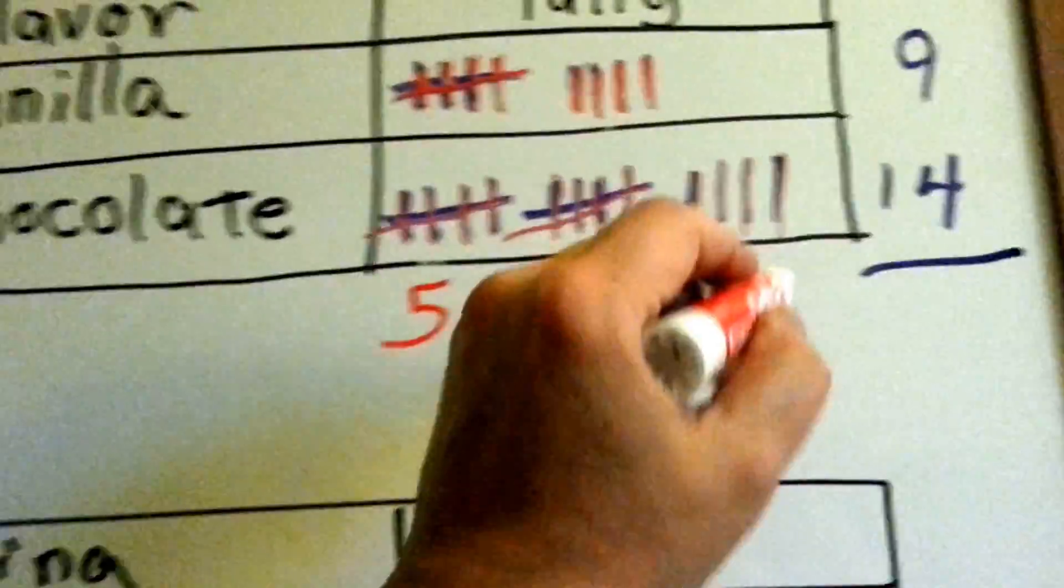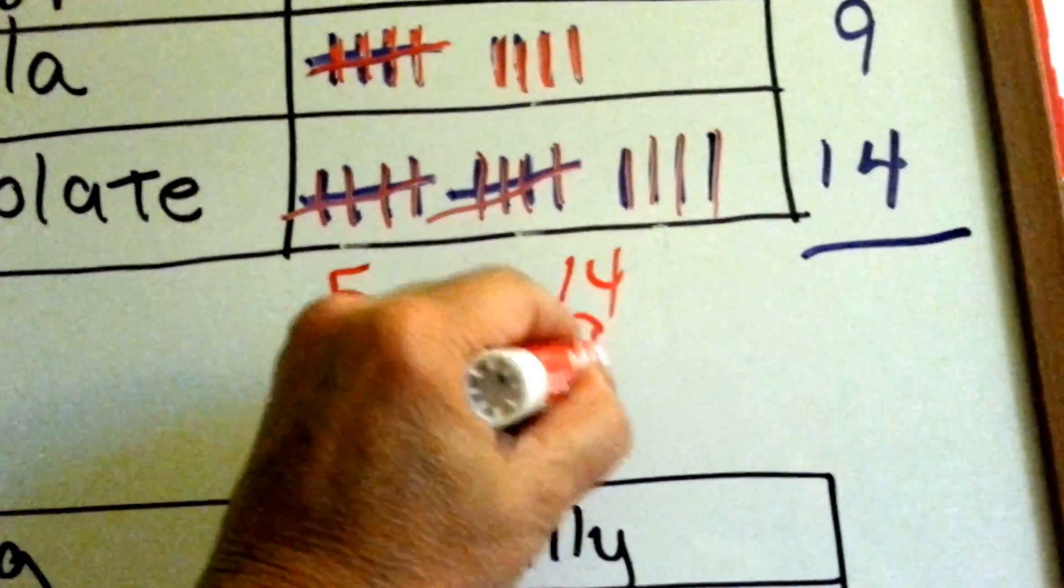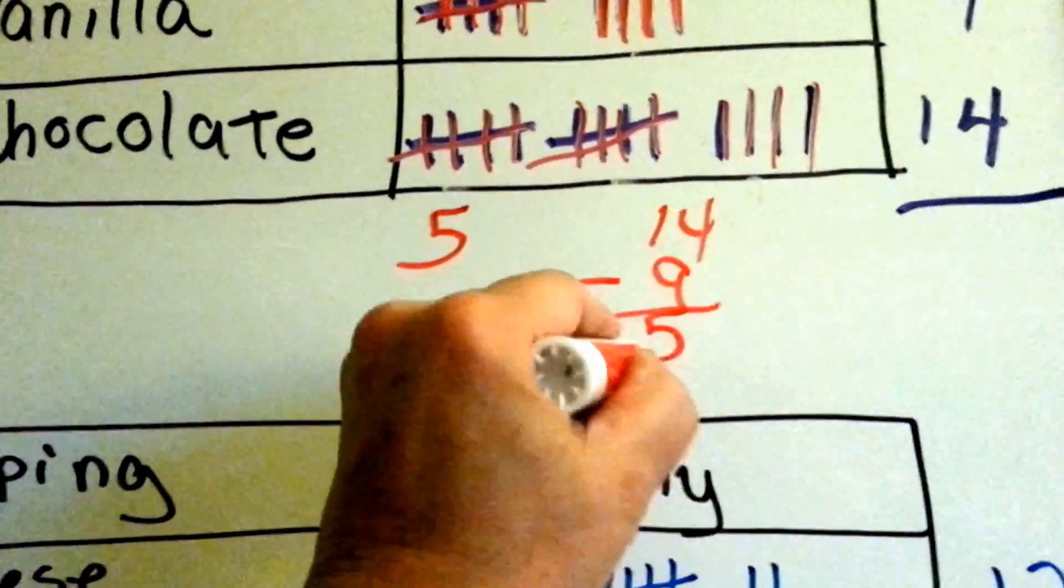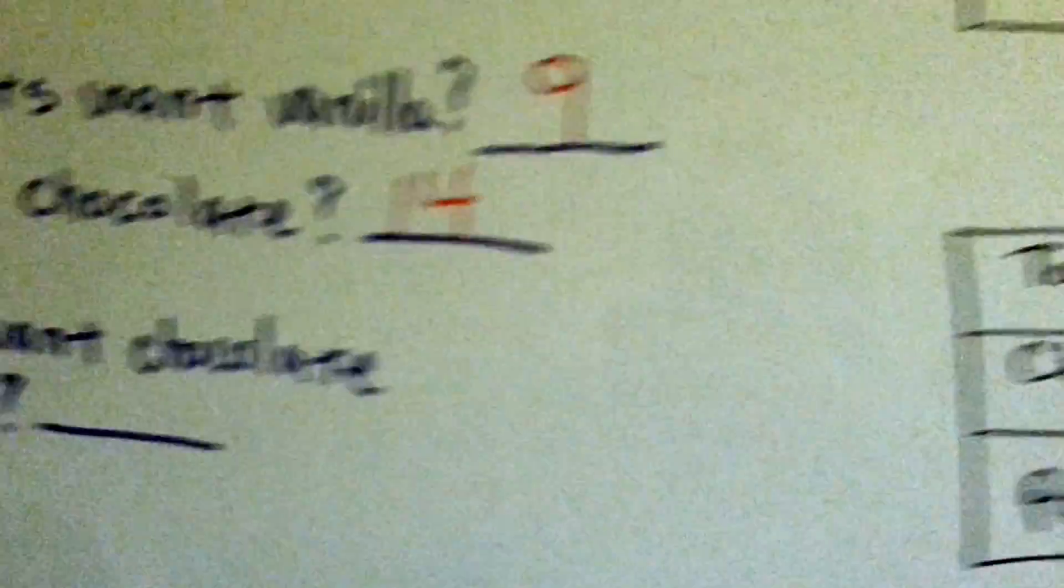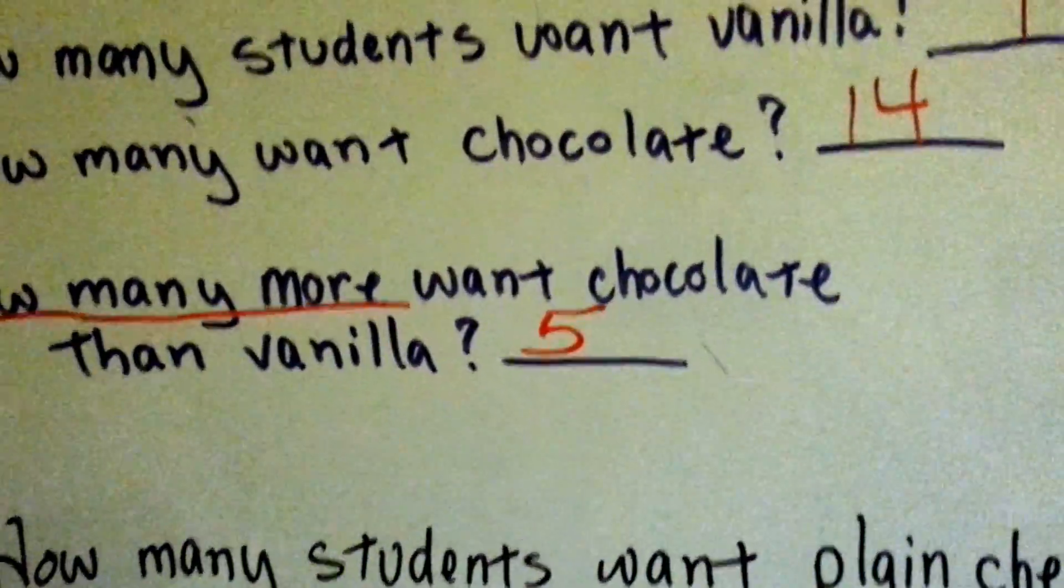Or we could count it and do 14 take away 9. 9, 10, 11, 12, 13, 14. Yep, 5. There's a difference of 5. There's 5 more kids that want chocolate than vanilla.